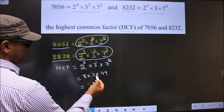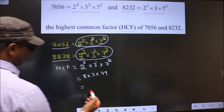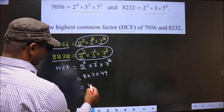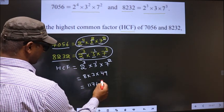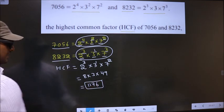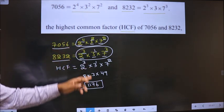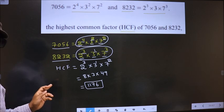See, 8 × 3 is 24. 24 × 49, you get 1176. This is our HCF. Am I clear?